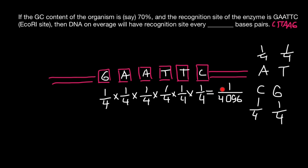So what does this number tell us? It tells us that roughly every 4096 base pairs along the double-stranded DNA, we are going to find one recognition site with this sequence — on one strand of the DNA, and the same sequence on the other strand.